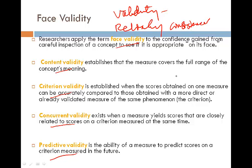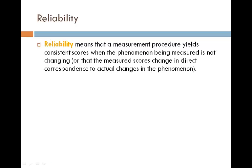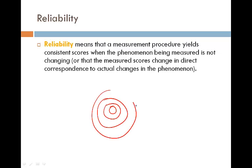Another way to understand validity is to think about hitting a target — validity means you hit the target. Reliability means consistency, where a measurement procedure yields consistent scores when the phenomenon being measured is not changing. Using the target analogy: if validity is hitting the target, reliability is always hitting the same spot consistently. A measurement that is reliable may not necessarily be valid — that possibility exists.